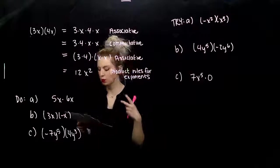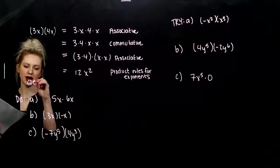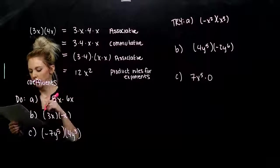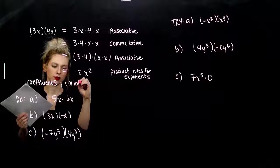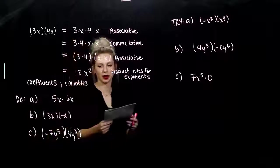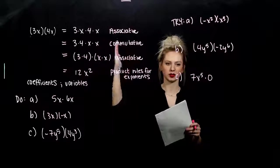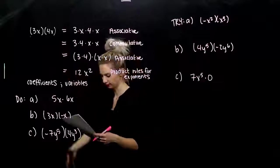So, to find the product of two monomials, we multiply the coefficients, or just the constants on the front. And then, multiply the variables using those product rules for exponents to write them nicely. Instead of having, you know, ten factors of x times x times x, we can concisely write it x to the tenth. Just an example.